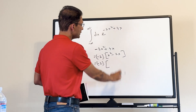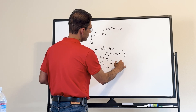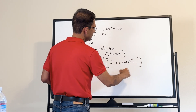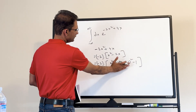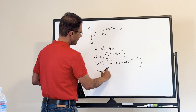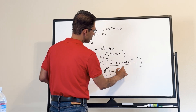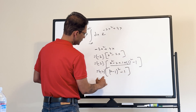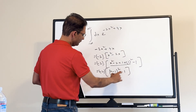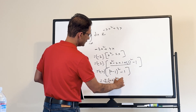We write x squared minus 2 times x times 1, then add and subtract 1 squared, so that the first three terms form (x minus 1) squared. We then distribute the negative 2 to get minus 2 times (x minus 1) squared plus 2.